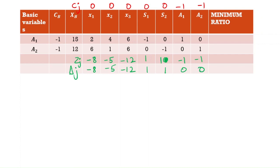Choosing the most negative delta j, this is our entering variable. To select the leaving variable we calculate the minimum ratio. The ratio is 12 divided by 6, which is 2. This is the minimum, so this is the leaving variable.